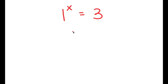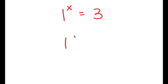In this equation, I have 1 to the power of x is equal to 3. This might seem like an impossible equation, right? Because how can 1 be raised to the power of any number and equal 3, if 1 to the power of even a million is still equal to 1?